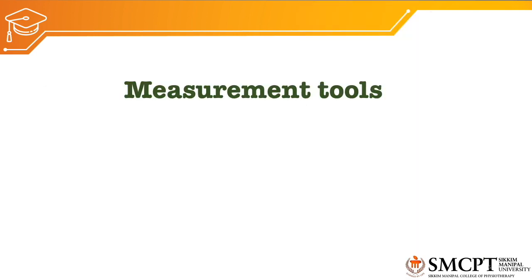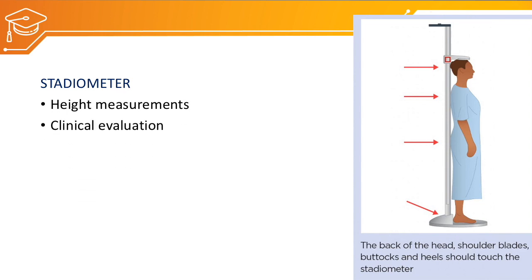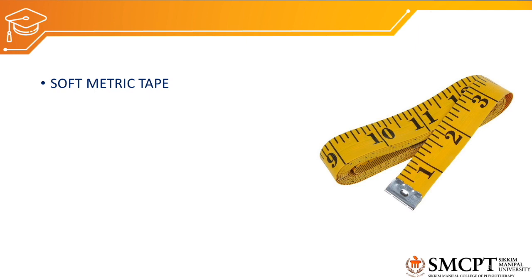Now, what are the measurement tools we can use for anthropometric measurements? The first is called a Stadiometer, which is used mainly for measuring height. It is used in clinical evaluation, for example after a vertebral fracture, to measure whether there is any reduction or increase in height. Another instrument is a soft metric tape, also called a measuring tape. This is a very simple and easily available tool, mainly used to measure the length and girth of limbs or any body part.